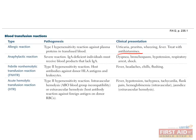A more dramatic example of a similar phenomenon is acute hemolytic transfusion reaction, which is what occurs when you have a transfusion of a frankly mismatched ABO blood type. It can lead to intravascular or extravascular hemolysis, which can lead to fever, hypotension, tachypnea, tachycardia, flank pain, blood in the urine, and jaundice.